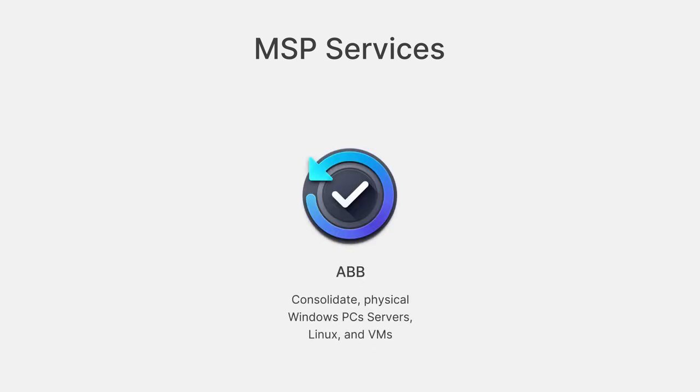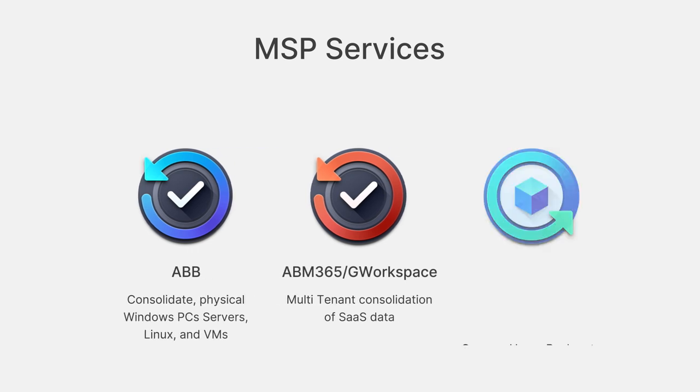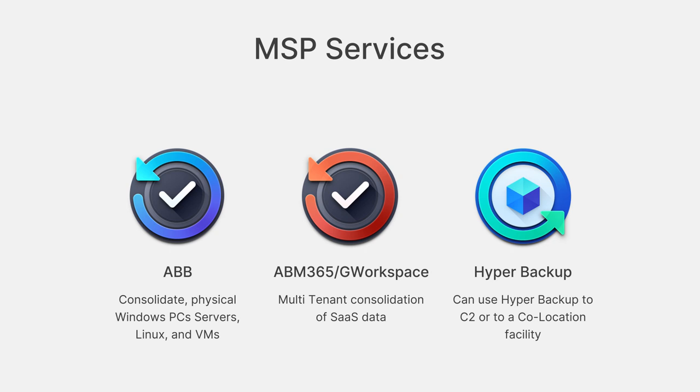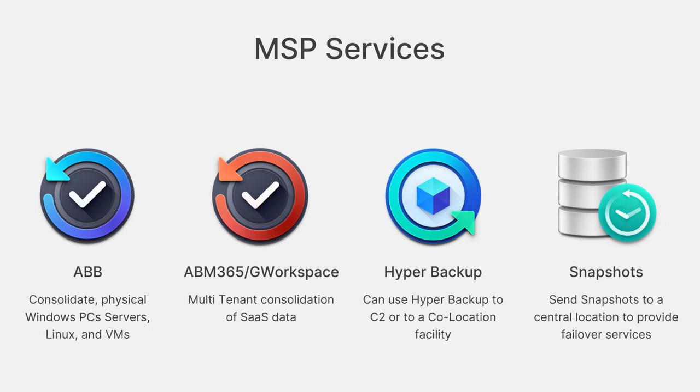We're going to start off with the Active Backup Suite. With Active Backup for Business, you can consolidate physical Windows PCs, servers, Linux servers, and even virtual machines in Hyper-V and VMware. With Active Backup for Microsoft 365 and Google Workspace, you can do multi-tenant consolidation of SaaS data. By using Active Backup for Business and Active Backup for Microsoft 365 or Google Workspace in tandem, you're consolidating all this scattered data into one location. With Hyper Backup, you can take that data and back it up to Synology C2 or a co-location facility. With Snapshot Replication, you can send snapshots to a centralized Synology NAS and provide failover services.